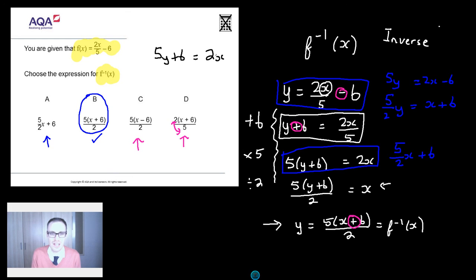Sorry a little x there. Then you're going to go wrong because you're going to divide by 2 then and get 5y plus 6 over 2 equals x. And you haven't got that crucial bracket in there. Without that bracket your question's wrong.